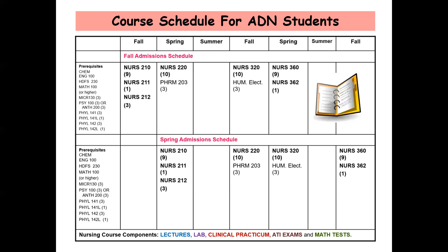In their final semester, students enroll in Nurse 360, Health and Illness 3, worth 9 credits, and Nurse 362, Professionalism in Nursing 2, worth 1 credit. Nurse 360 is your second medical surgical nursing course, which also includes a psychiatric mental health nursing rotation. Nurse 362 follows up on Nurse 211 and introduces current issues in nursing and health care and nursing roles. Principles of organizational structure, leadership, decision making, and priority setting are also discussed.